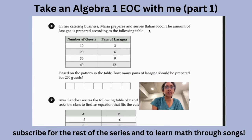In her catering business, Maria prepares and serves Italian food. The amount of lasagna prepared is according to the following table. So 10 guests, 3 pans of lasagna; 20 guests, 6 pans of lasagna; 30 guests, 9 pans of lasagna; and 40 guests, 12 pans of lasagna. So based on what we're seeing here, we need to find the rate of change. And let's do that by finding the change in y over the change in x and seeing if it is the same. So I assume number of guests is x because that is the independent variable. So that is 10, that is 10, that is 10. And then here we have 3, 3, 3. So the slope in this case is obviously 3 over 10.